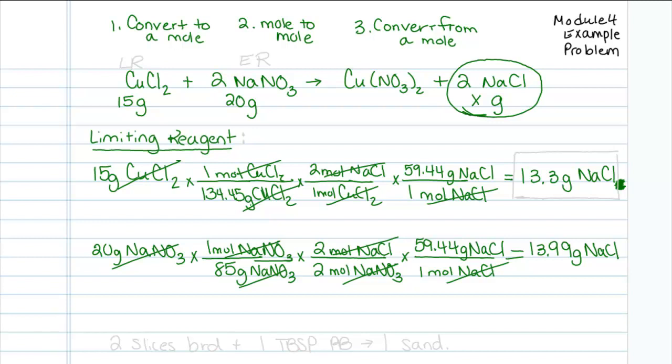I can make no more than the least. In other words, once this 15 grams of copper chloride is out, it is out. And the most I can produce is 13.3 grams of sodium chloride. That tells me that copper chloride is going to be my limiting reagent and sodium nitrate is going to be my excess.